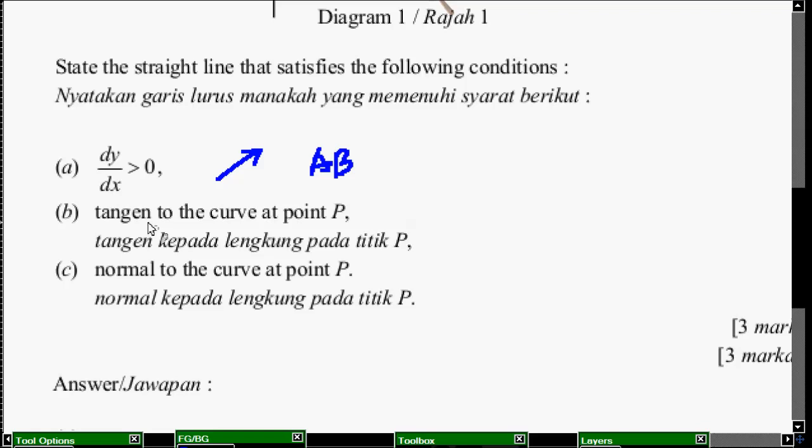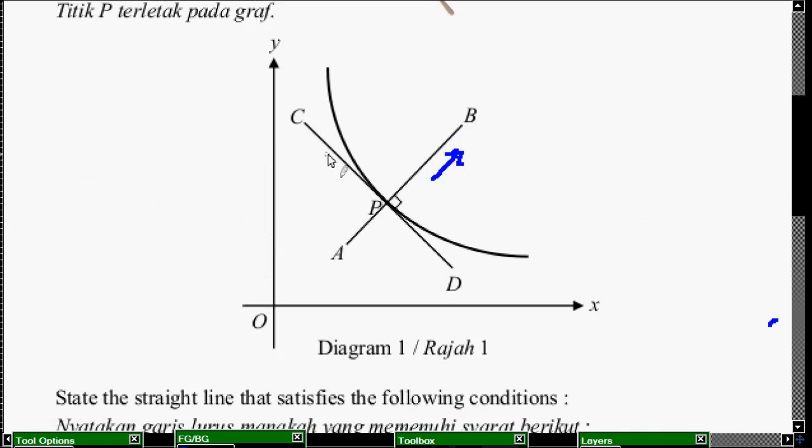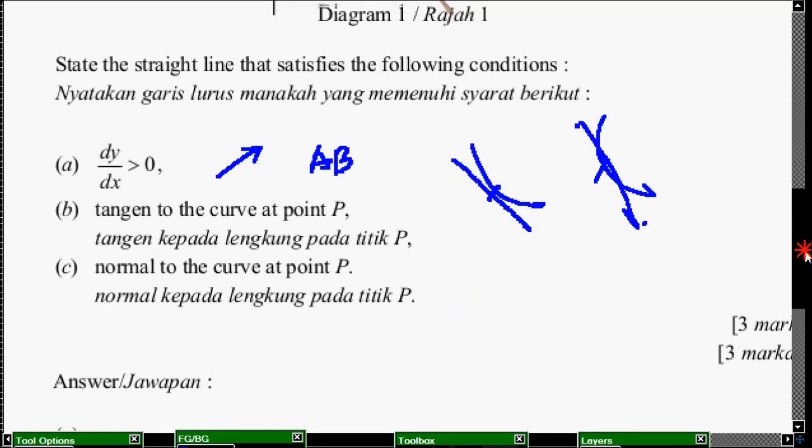Yang kedua. Tangent to the curve at point P. Tangent, kalau kita nak tahu, kalau curve tu macam tu, dia just touching. Dia touching satu point, ini. Dia touching. Memang exactly dia touching. Jadi, kekat point. Haa, ni. To tangent. Tangent dia touching je, gitu. So, inilah. Point CD. Garis CD. Garis lurus CD tu.